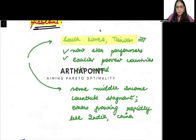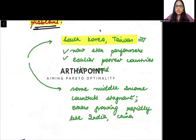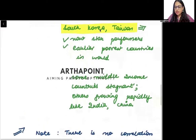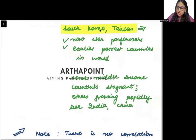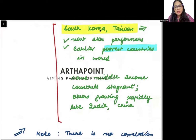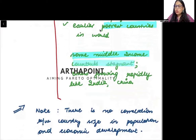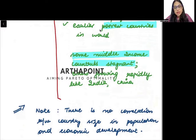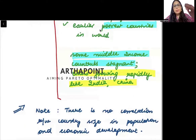For example, South Korea and Taiwan are now seen as star performers, but earlier they were among the poorest countries in the world. Slowly they started to change and grow. We are looking at the disparity among different kinds of countries. Some countries that were earlier among the poorest have now started doing well, while some middle income countries have become stagnant, and others like India and China have rapidly started growing.